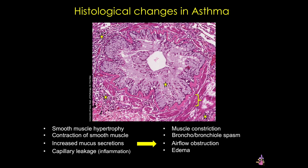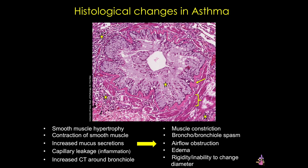In asthma, there's often vasodilation of the microvasculature, so there's increased vascular permeability, which results in edema. Finally, you can see a ring of connective tissue around the bronchiole, which contributes to the rigidity and inability of the airway to change diameters, obstructing airflow. The resulting difficulty in breathing from all of these changes can be mild to severe. Asthma is treated by drugs that relax the muscle and increase bronchiolar diameter by stimulating the sympathetic nervous system, while other drugs target the underlying chronic inflammation, including eosinophil recruitment and activation.